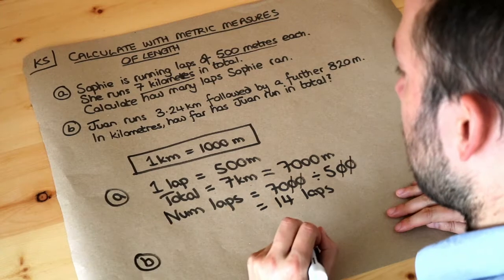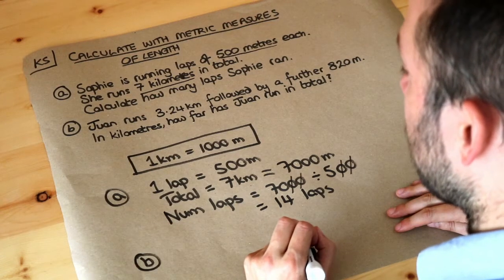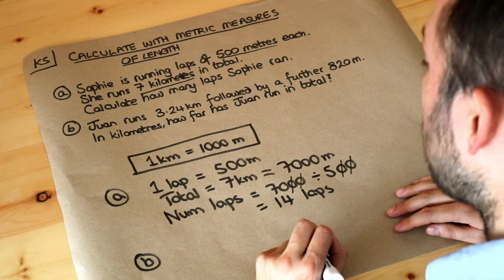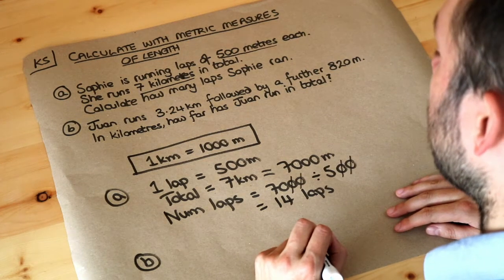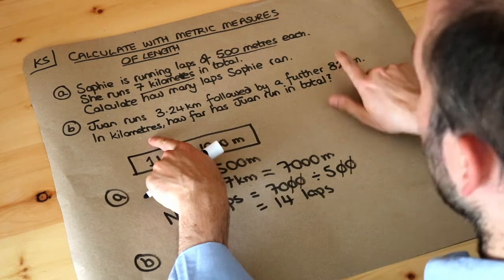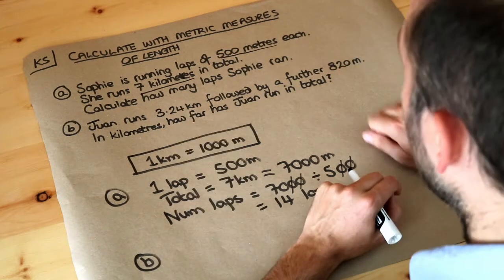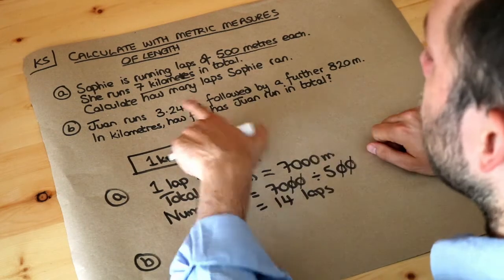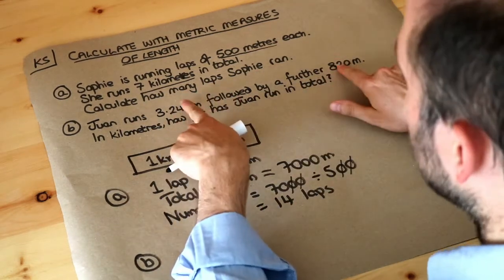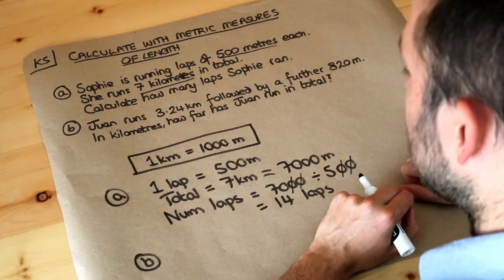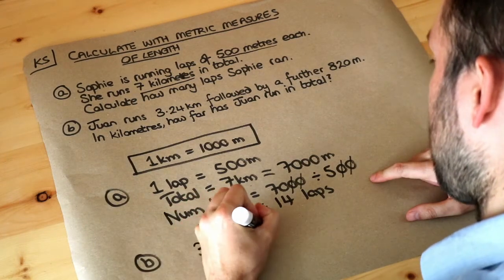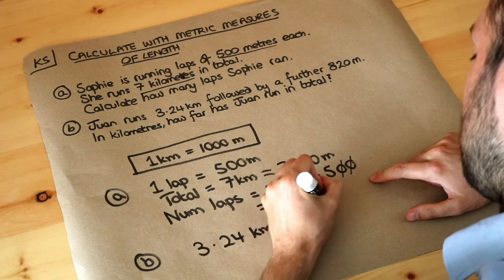Now the second problem. Juan runs 3.24 kilometres followed by a further 820 metres. In kilometres, how far has Juan run in total? The answer is wanted in kilometres, so we should make sure both distances are in kilometres. Since we're adding two distances together, the total is just the sum of 3.24 kilometres and 820 metres — but they need to be in the same unit first.